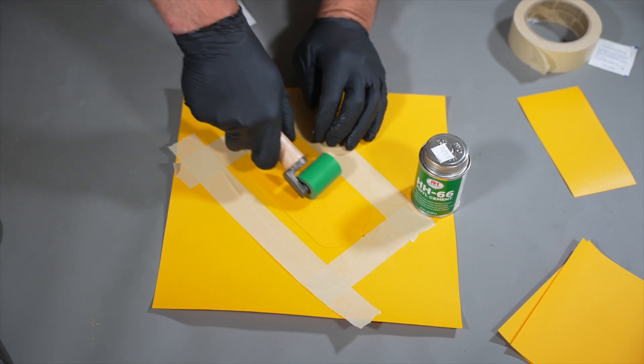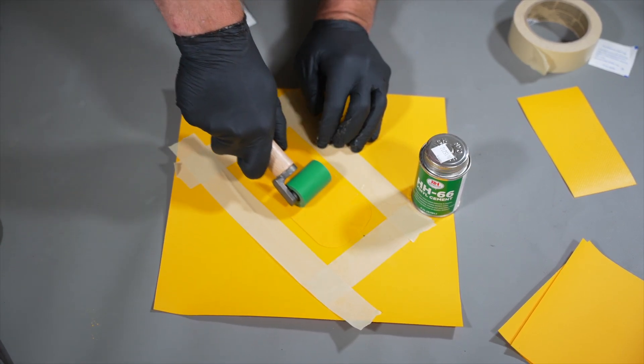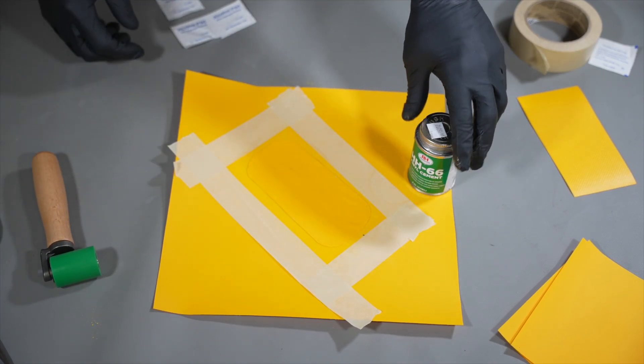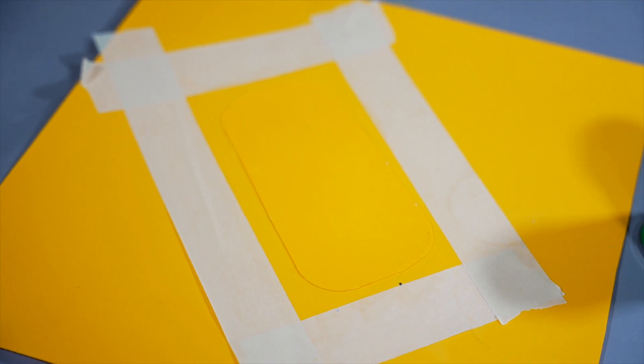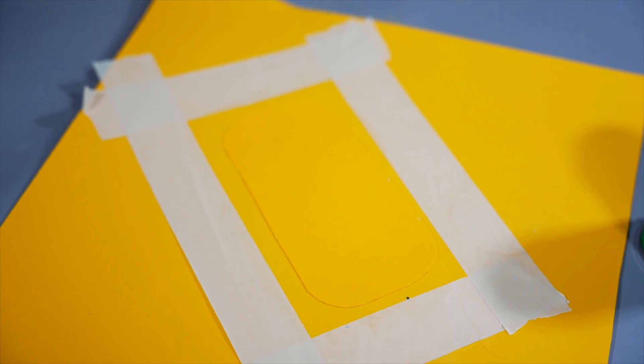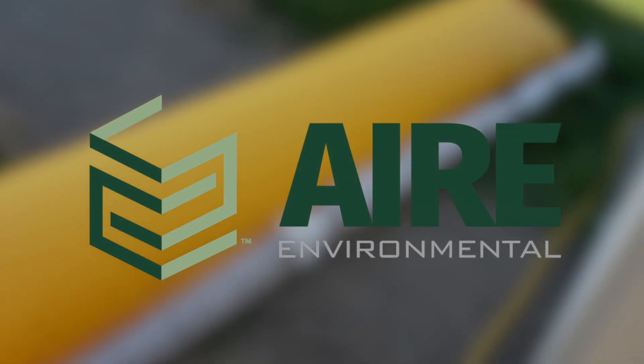Use a roller or rounded-edge putty knife to apply pressure to the whole patch and be sure to push out any air bubbles. Allow 24 hours before filling the diversion tube with water. Once the patch has been secured and the adhesive is cured, the repair process is complete and you may use your air-environmental diversion tube for future flood prevention needs.